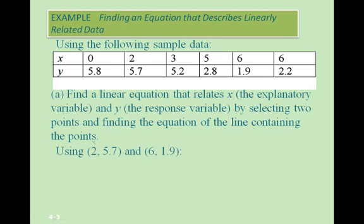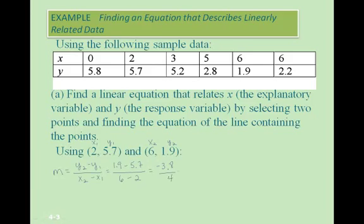We'll call (2, 5.7) x1 and y1, and (6, 1.9) x2 and y2. Remember from algebra, to find our slope we take y2 minus y1 divided by x2 minus x1. So we have 1.9 minus 5.7 divided by 6 minus 2, which gives us negative 3.8 divided by 4, or negative 0.95.